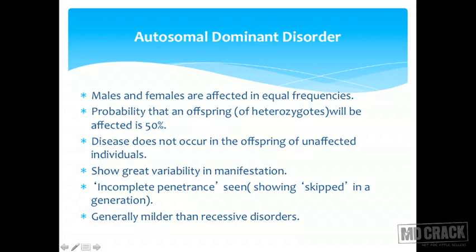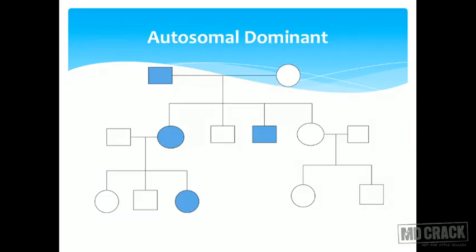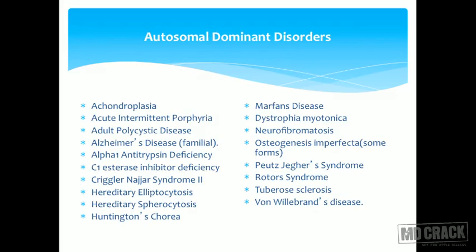The disease inheritance pattern of autosomal dominant disorders shows that an affected individual has a 50-50 likelihood of having an affected child. It has nothing to do with the sex chromosomes, so both males and females can be affected. If somebody is affected, it passes on because it is autosomal dominant. This is a typical pedigree chart of an autosomal dominant disorder.